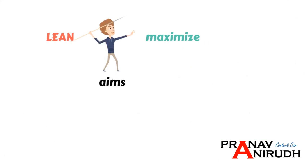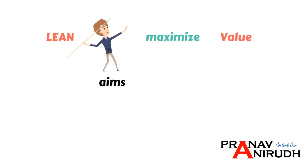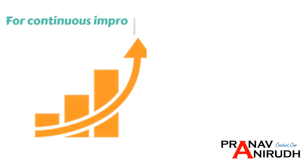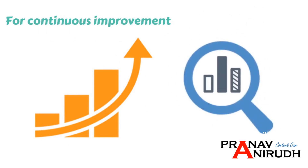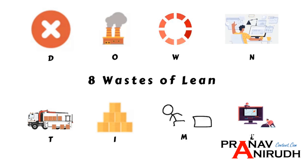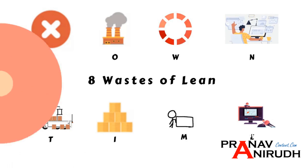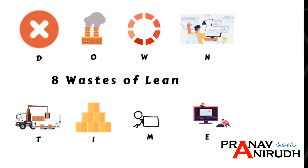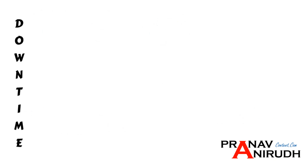Lean aims to maximize customer value by eliminating waste through continuous improvement. For continuous improvement, the company needs to identify and minimize the eight common forms of waste. The acronym for the eight wastes is DOWNTIME, and this acronym helps us to remember these wastes in sequence.